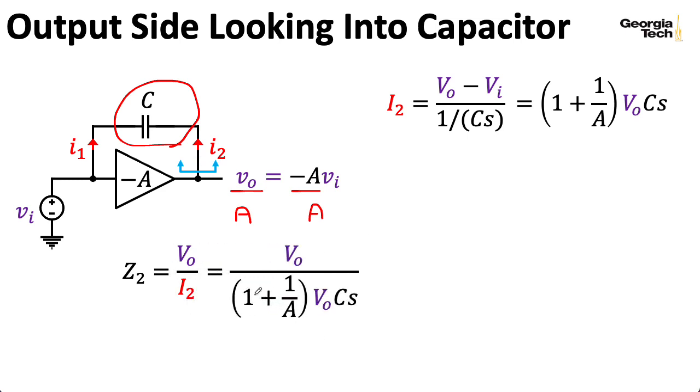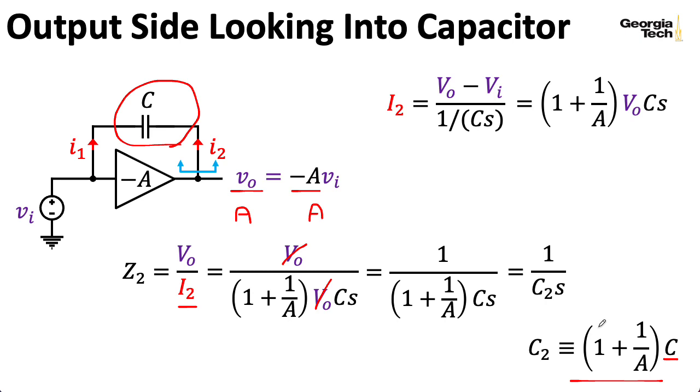And when I plug in the expression for I2, the voltages again cancel. So I wind up with this expression here. And let's again define a new capacitance as 1 plus 1 over A times my original capacitance. So we can write this impedance as 1 over C2S.